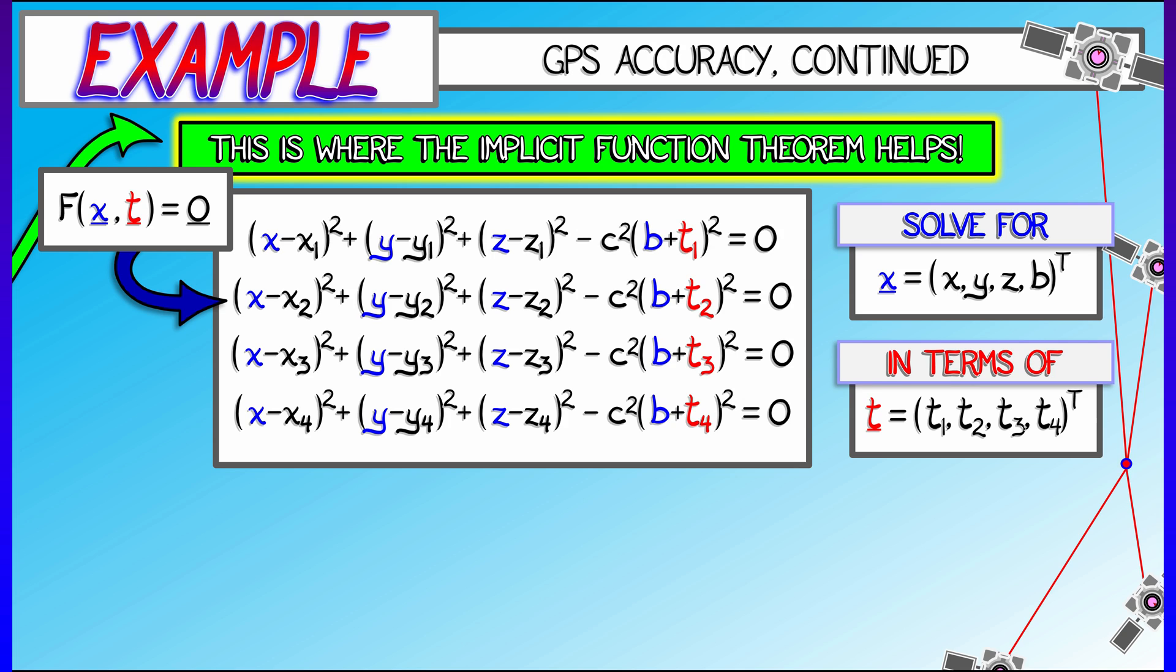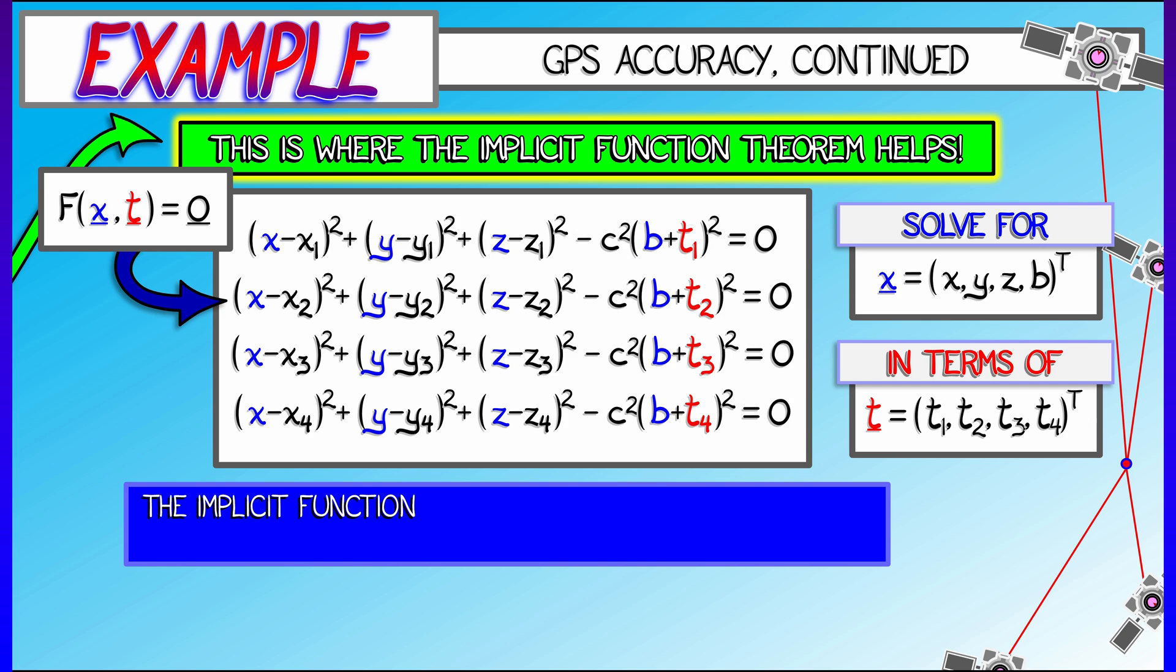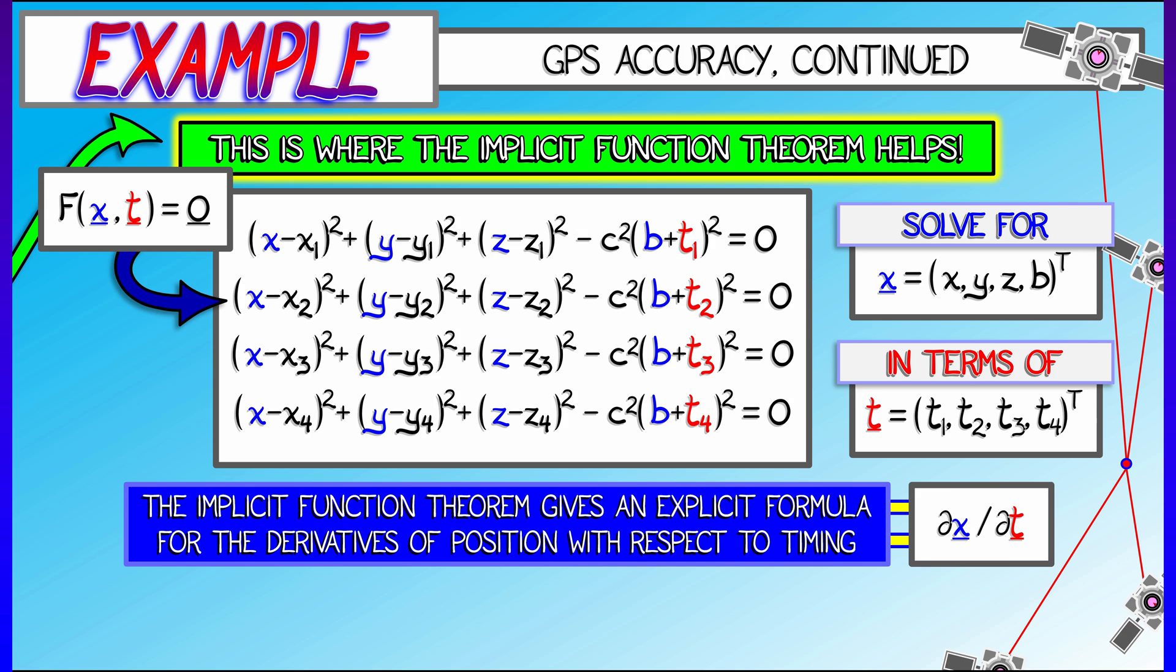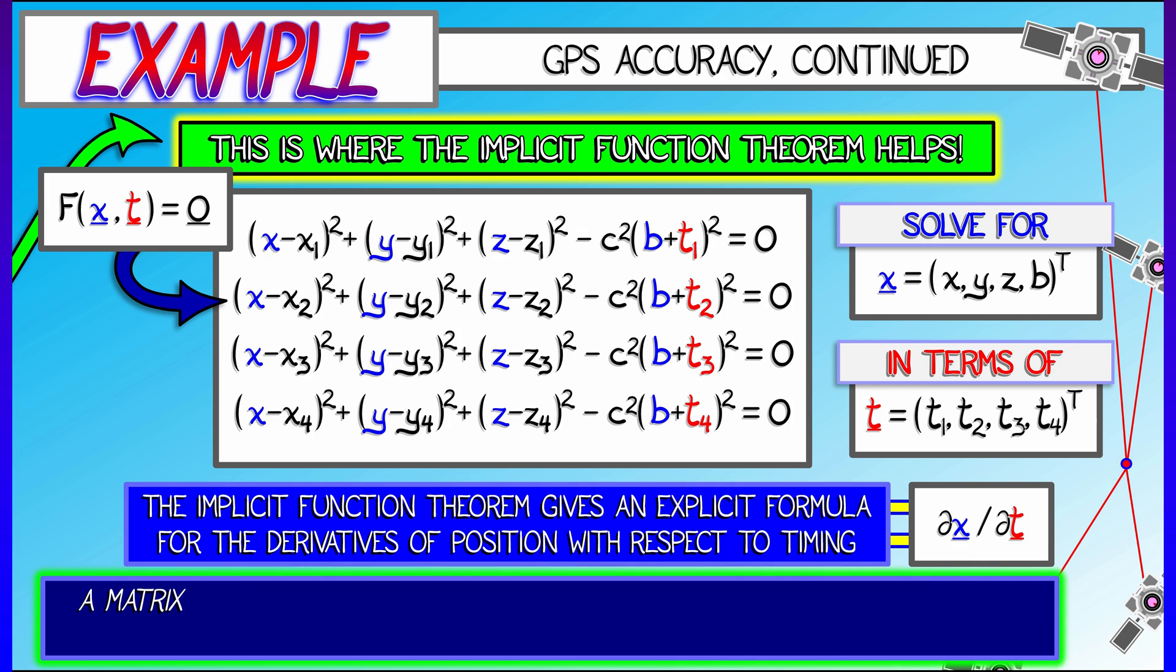Where the x variables are the receiver locations and time bias, the t variables are the time differences t1, t2, t3, t4. Now the implicit function theorem tells you, if you're at a solution, how does one variable vary with respect to the other? In this case, what are the derivatives of the x variables with respect to the t variables?